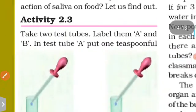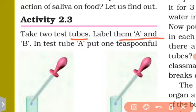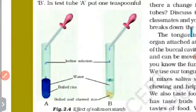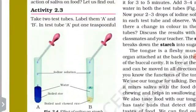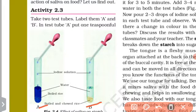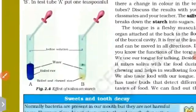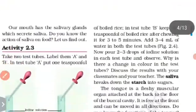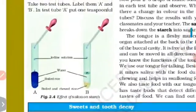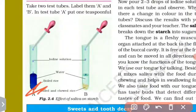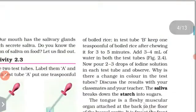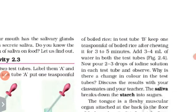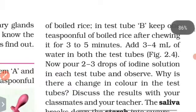Activity 2.3: take two test tubes and label them A and B. In test tube A, put one teaspoon of boiled rice. In test tube B, keep one teaspoon of boiled rice after chewing it for three minutes.